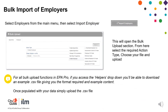For bulk import of employers, select Employers from the main menu, then select Import Employer. This will open the bulk upload section. From here, select the required action type, choose your file and upload. For all bulk upload functions in EPA Pro, if you access the helpers dropdown, you'll be able to download an example CSV file, giving you the format required and example content. Once populated with your data, simply upload the CSV file.